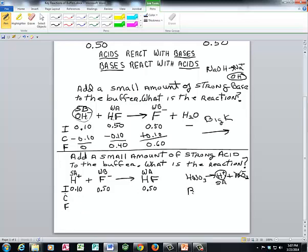This is also a big K reaction because we're adding strong acid. The reaction goes effectively all the way to products. Our change is going to be minus 0.10 molar, minus 0.10 molar, and plus 0.10 molar. Every time hydrogen ion reacts with the fluoride ion, it forms a molecule of hydrofluoric acid, and it will go all the way to products in that reaction. Initial, change, final.